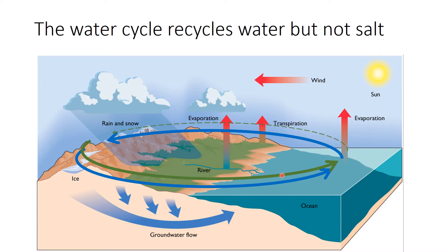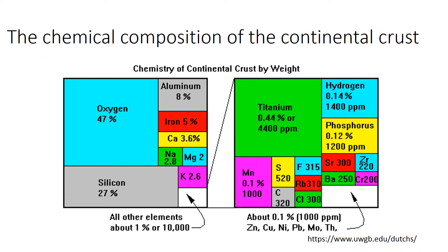That keeps the flux of ions to the ocean continuous and allows salts to build up in the ocean. The key question we're going to look at is where do these dissolved ions actually come from. This is the chemical composition of the continental crust — mostly oxygen and silicon, which is not surprising because most of the continental crust is made up of silicate rocks. There's also some aluminium and iron, held in minerals like feldspars and pyroxenes, and then a small component of minor elements at much lower concentrations.